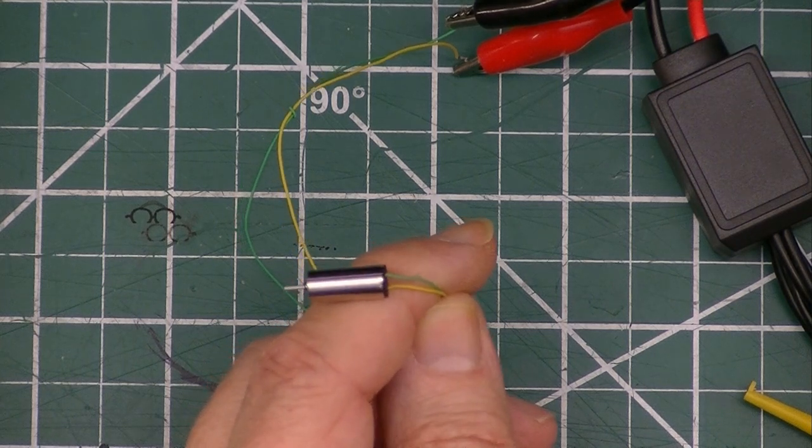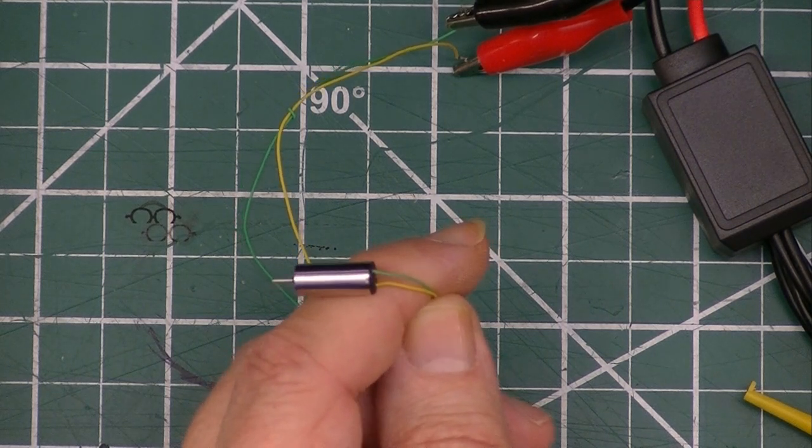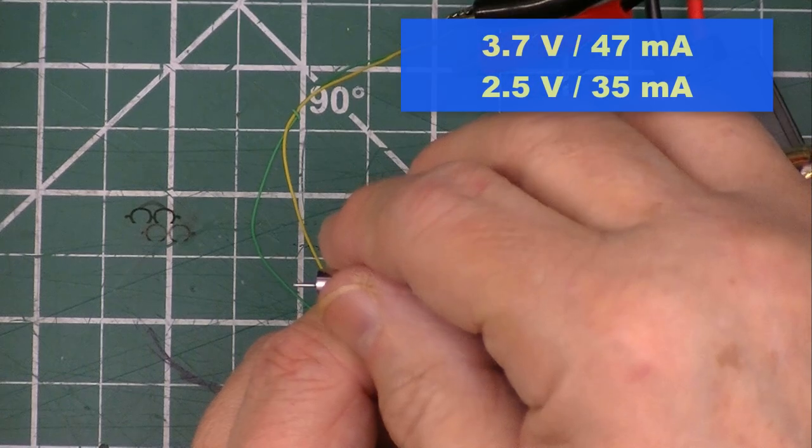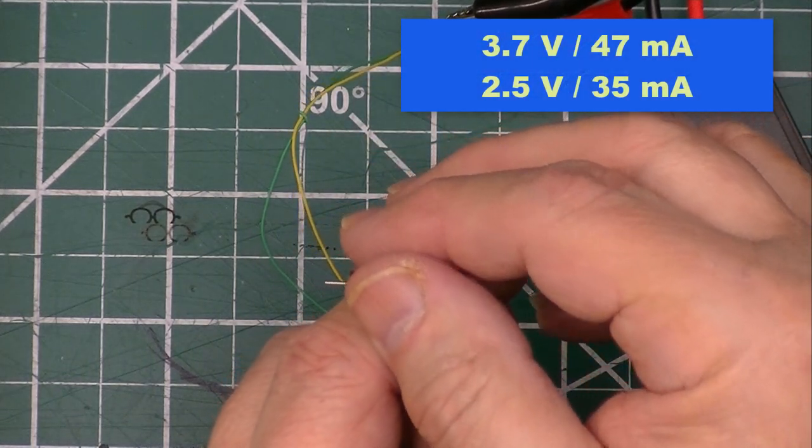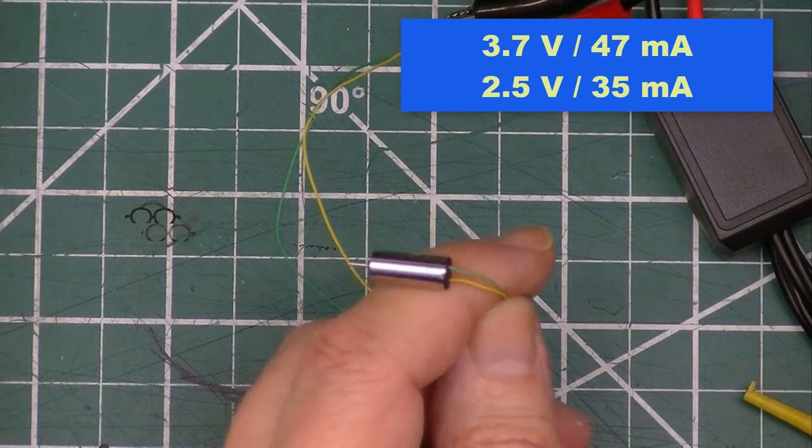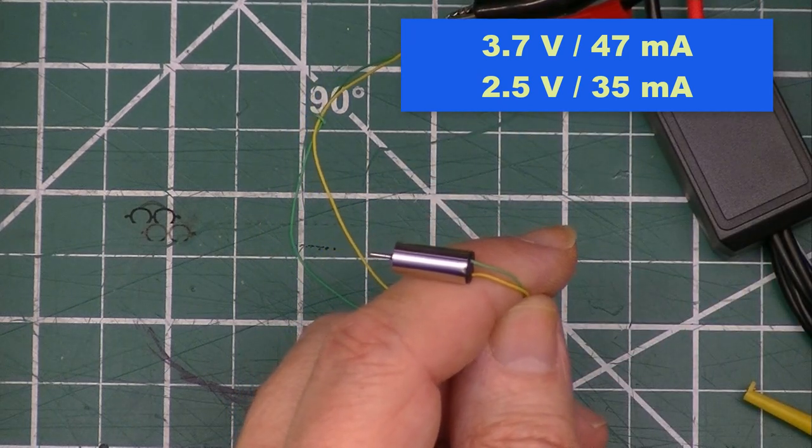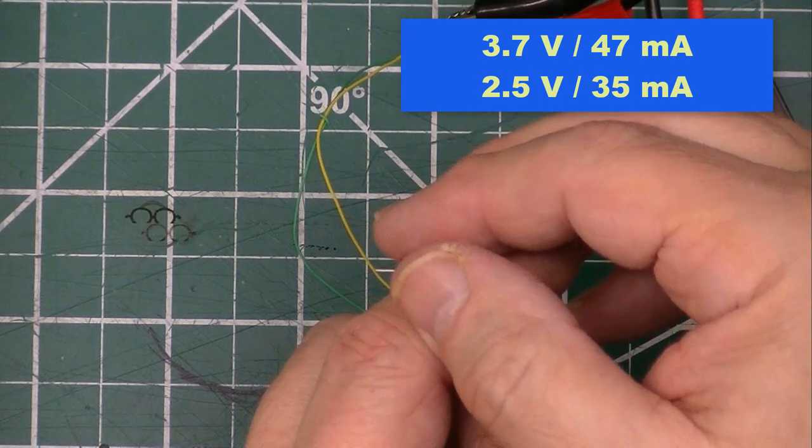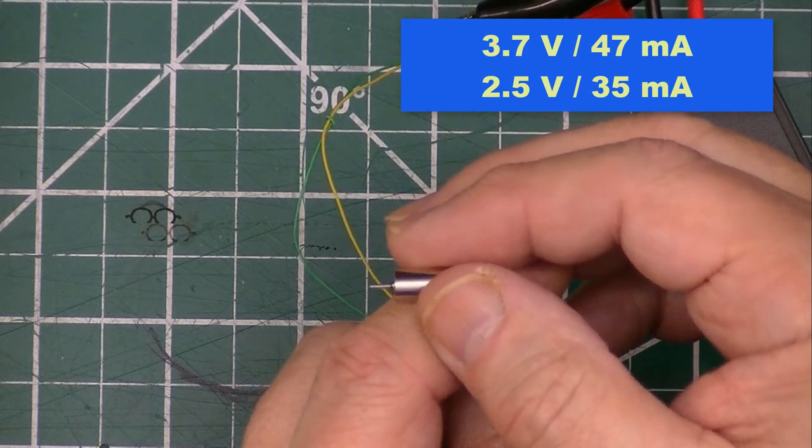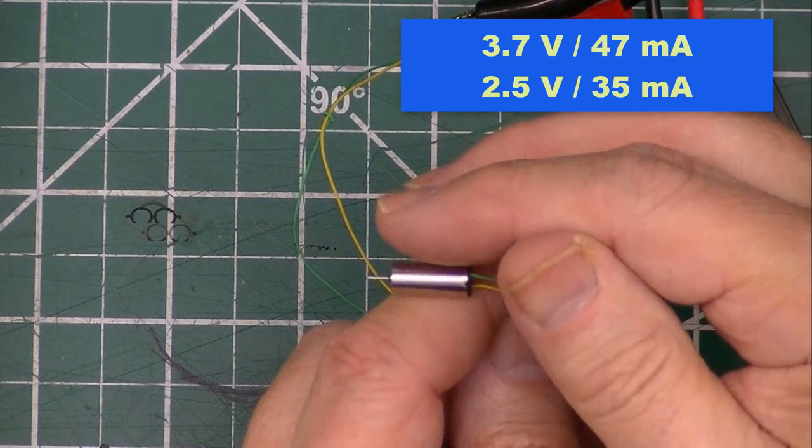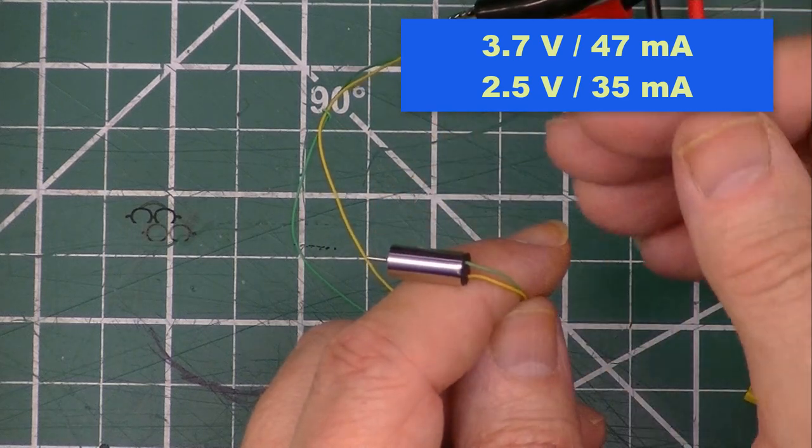Here I've hooked it up to my Dr. Meter power supply. I got it dialed up to 3.7 volts. That thing really is humming and it's warm. I'll back it down a little bit to about two, two and a half volts. That little puppy is really spinning.